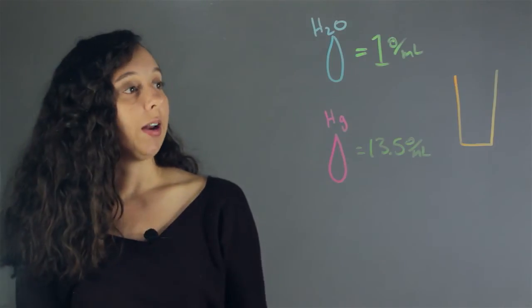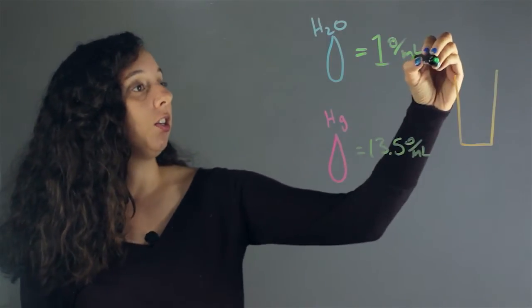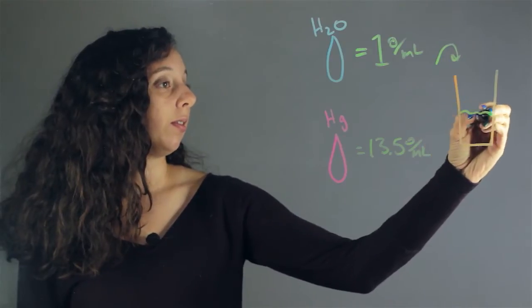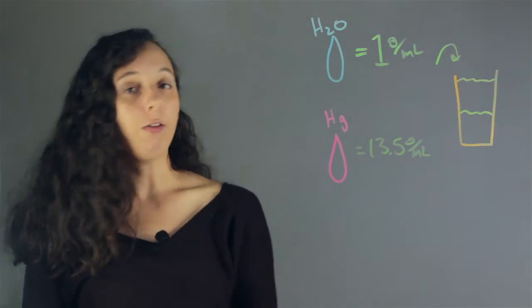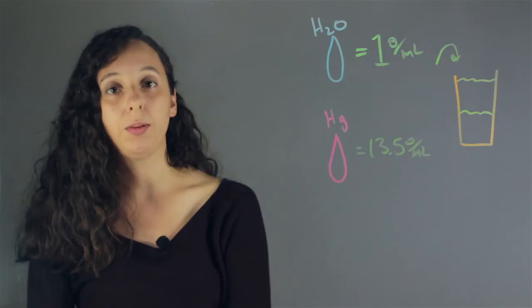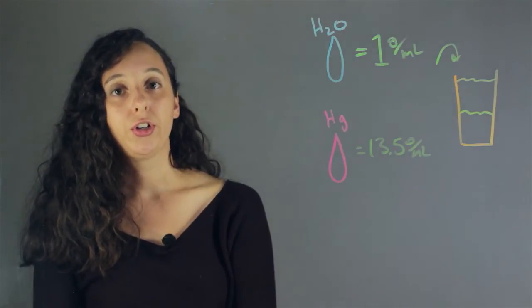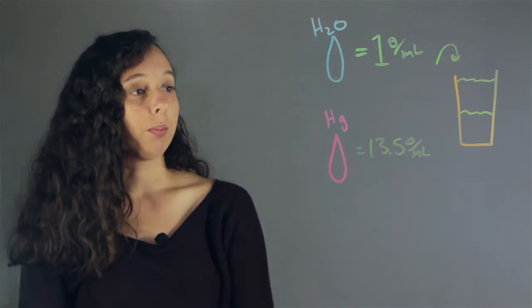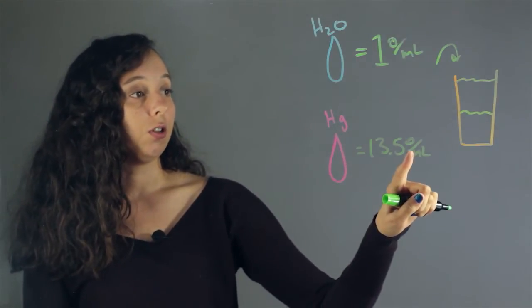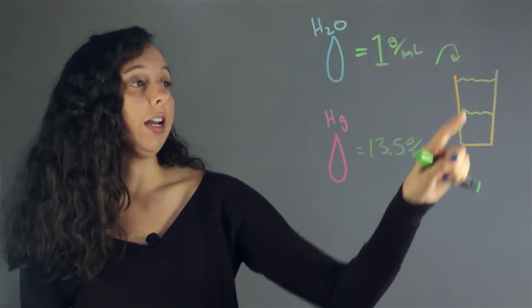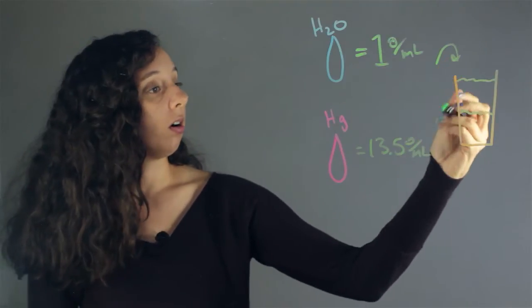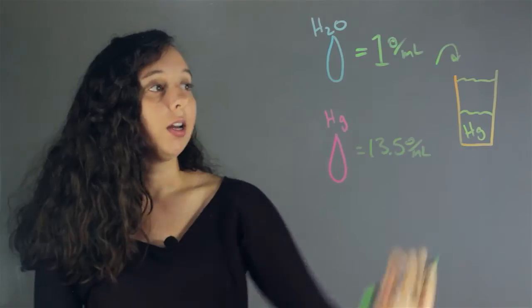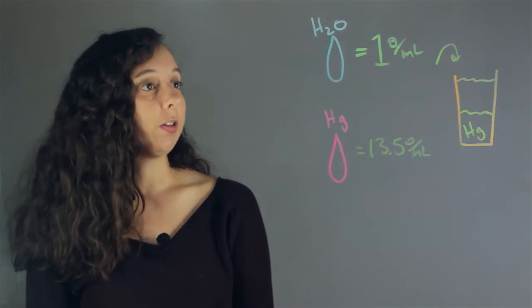So what would happen if you put both of these into a cup? Well, you'd create two layers and we can actually predict which substance would go into which layer just by looking at the densities as we can with all liquids. So mercury is going to be weighed down more by gravity and it's going to be found all the way at the bottom. Whereas water is much lighter, it's going to be up here.